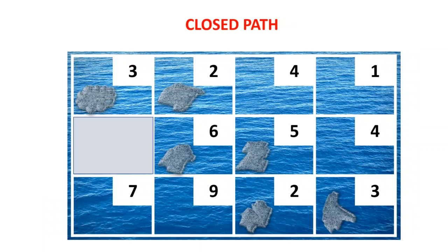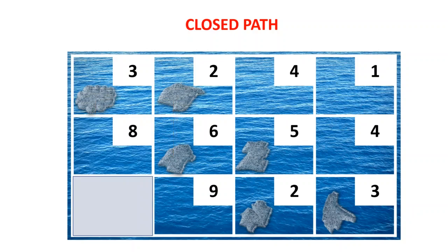We start by looking at the different closed paths for this example, starting from the cell shown in grey. We want to trace a path from this unoccupied cell back to itself, changing direction only on the stones using horizontal and vertical movements only. Starting from this cell, you go to the right. You can't go down — you'd step on the river and sink — so you go up. Then you go left and down again. That is the closed path for that cell. For the next cell at the bottom corner, you go right, change direction, go up, change direction, go left, up, left, and down again.